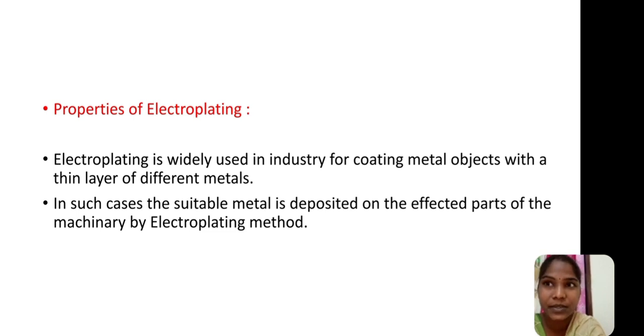Then, the properties of electroplating. Electroplating is widely used in industry for coating metal objects with a thin layer of different metals. In such cases, the suitable metal is deposited on the affected parts of the machinery by electroplating method.